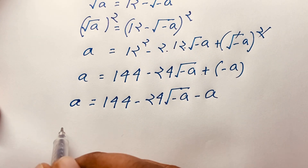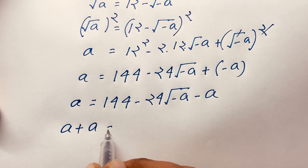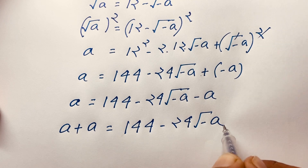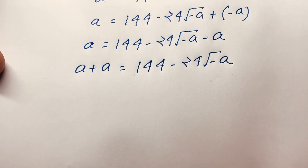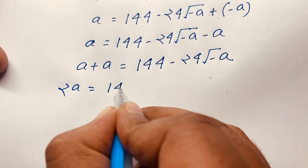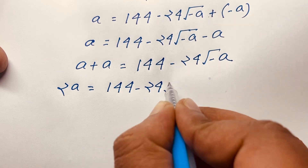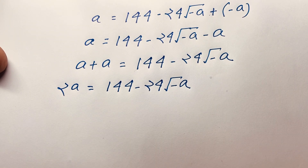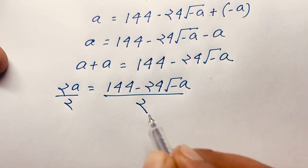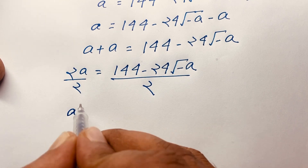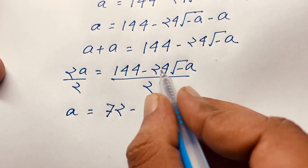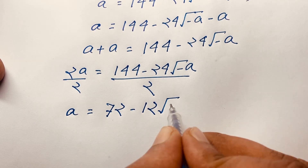If I move this A to this side, it will be A plus A equals 144 minus 24 square root negative A. I solve this question step by step. Here A plus A equals 2A, and it will be 144 minus 24 times square root negative A. Now I divide both sides by 2. So 2A divided by 2 gives A, and 144 divided by 2 is 72, minus 24 divided by 2 is 12, times square root negative A.